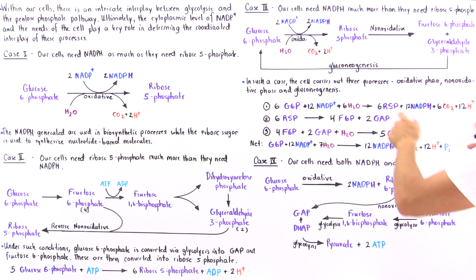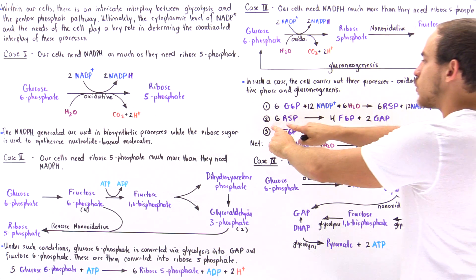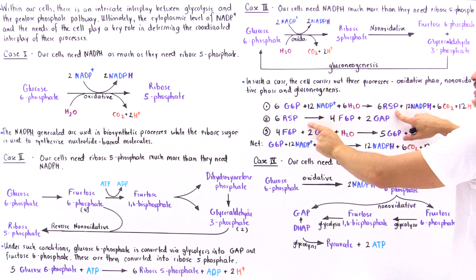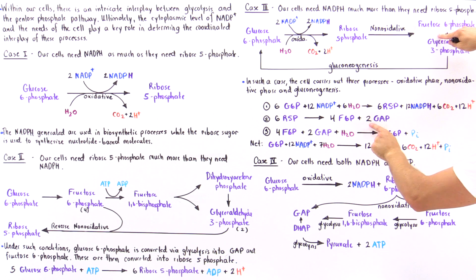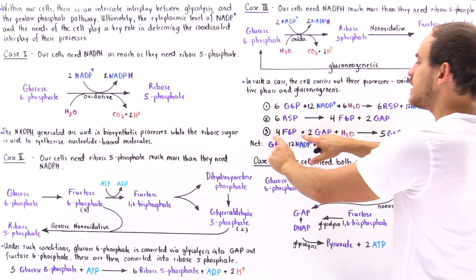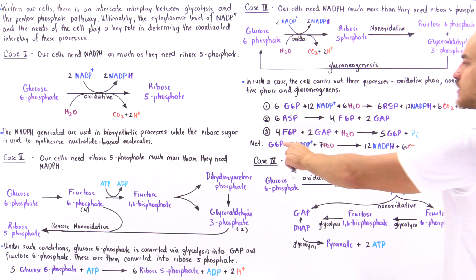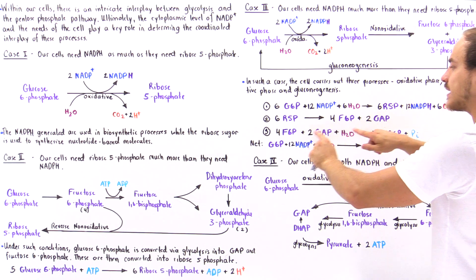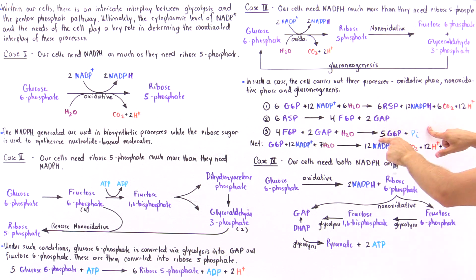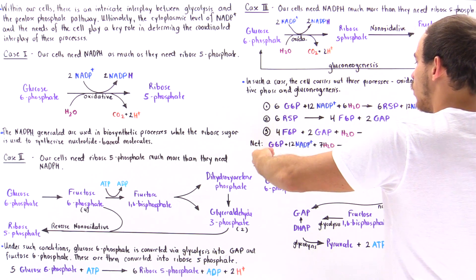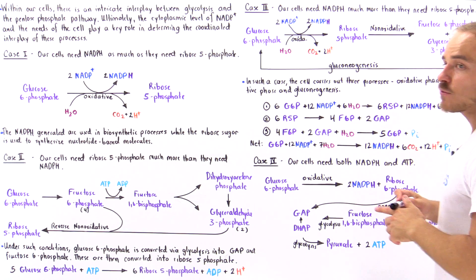Then these two intermediates — 4 fructose-6-phosphate and 2 glyceraldehyde-3-phosphate — along with a water molecule, react via gluconeogenesis to generate 5 glucose-6-phosphates and a single orthophosphate. Summing all three steps gives us the net reaction.